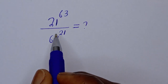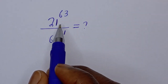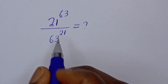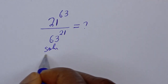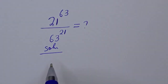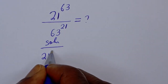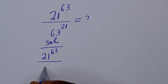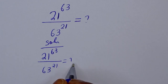Hello. How to simplify this problem: 21 raised to power 63 divided by 63 raised to power 21 — what is the solution? This is our unknown.